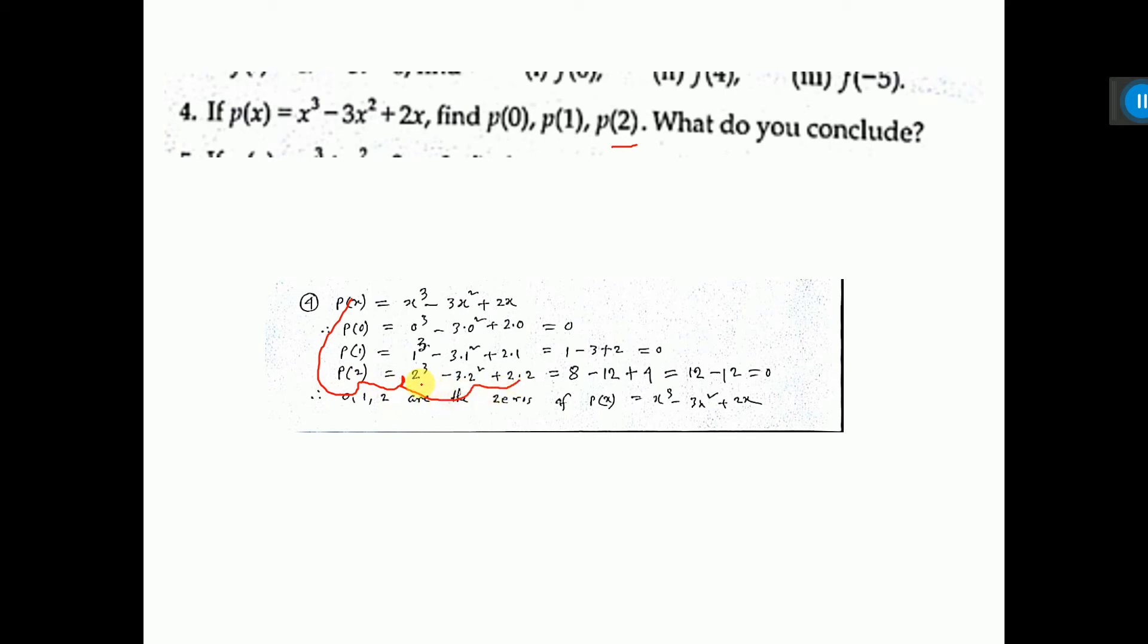Now, calculate 2 into 2 into 2, that is 8. 2 squared, 4 into 3, that is 12. 2 squared, 4. Here, 8 plus 4, that is 12. 12 minus 12, 0.